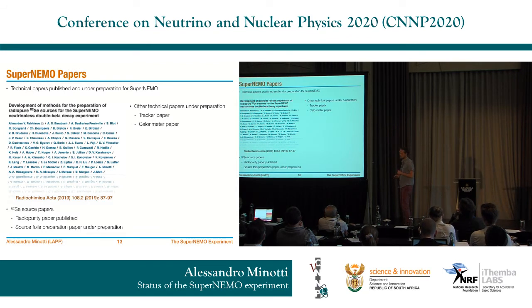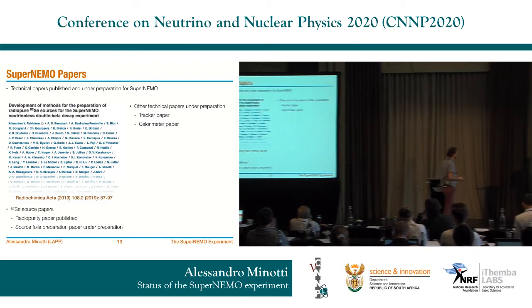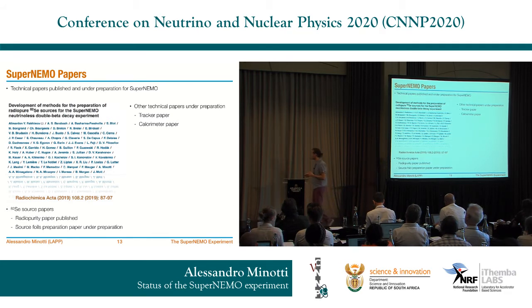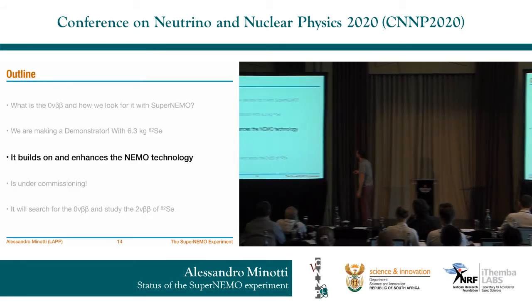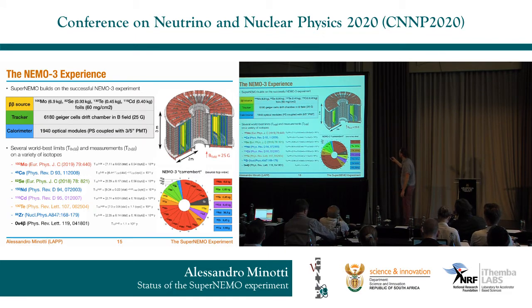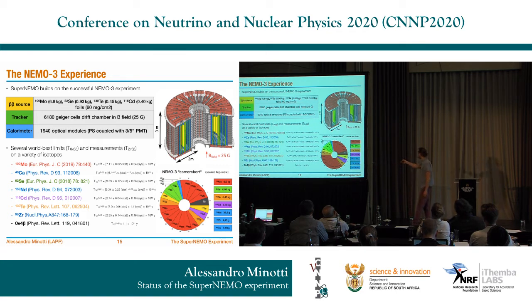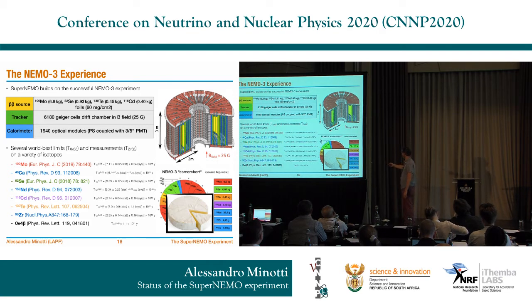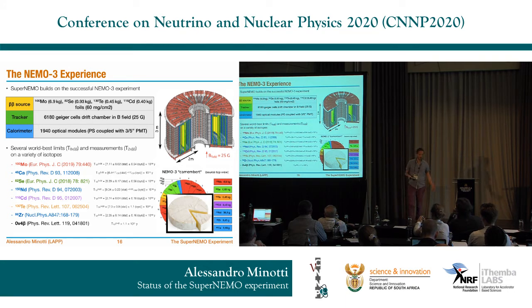There are already some papers on SuperNEMO, even though the detector is still commissioning — a technical paper on the purification of the source and another on the source foil preparation currently under development, as well as technical papers on the tracker and calorimeter. SuperNEMO builds on NEMO3, which had a circular 'camembert' shape allowing different isotopes in each slice. Thanks to that, NEMO3 was able to set world-leading limits and measurements on a large number of isotopes.